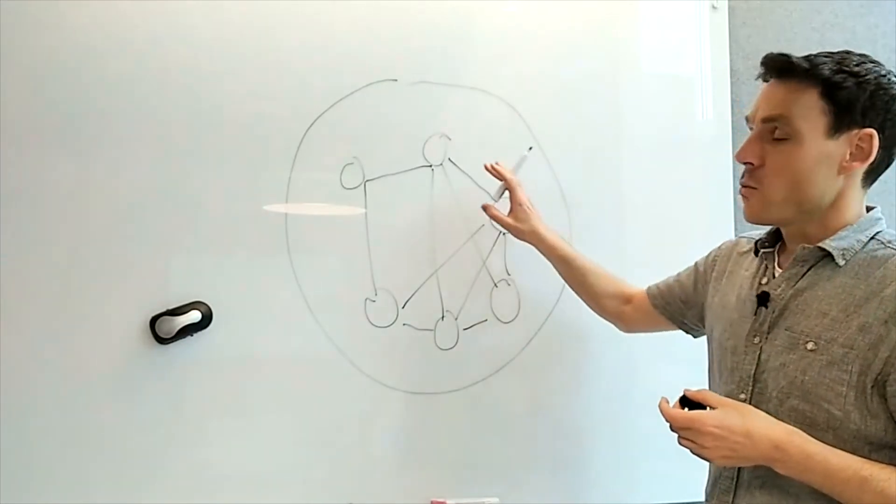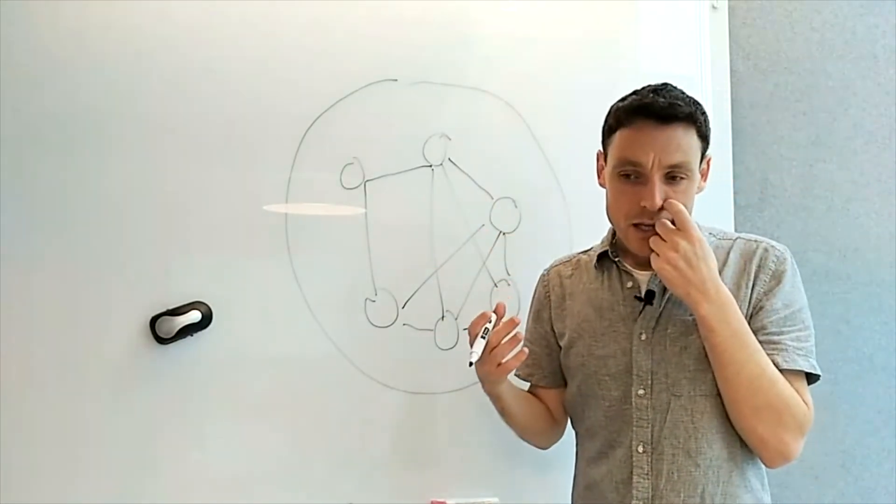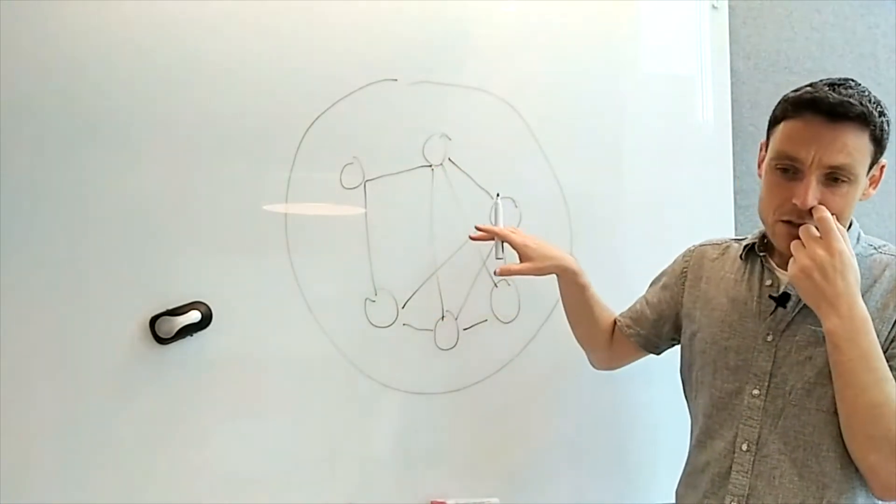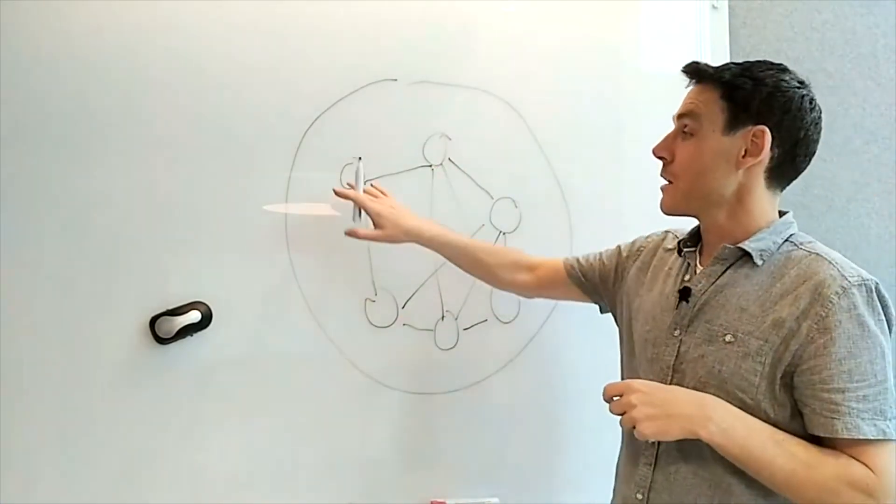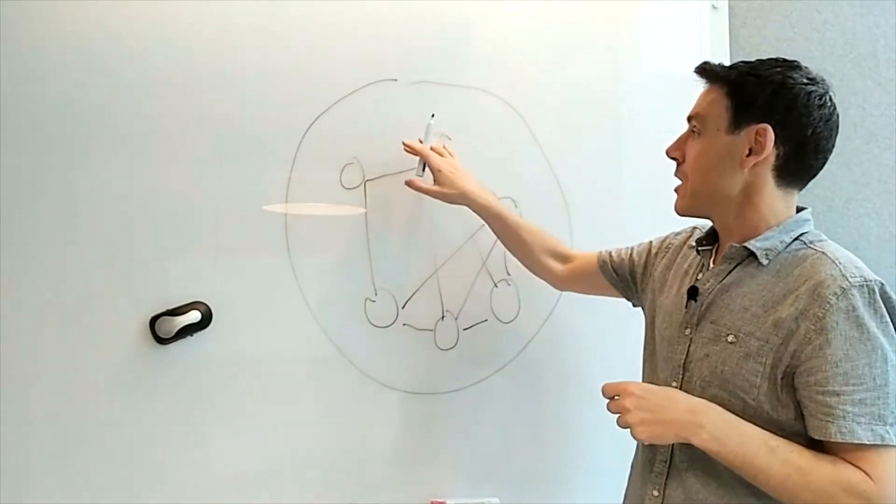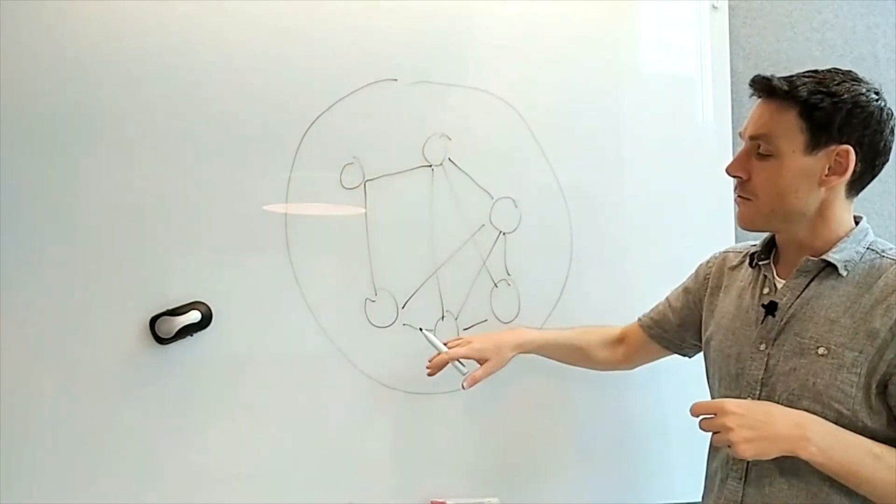So one point that people make about analytical thinking and not having this holistic view of the system is that we can do something over here and not know the effects that it's having over here or over here or over there.